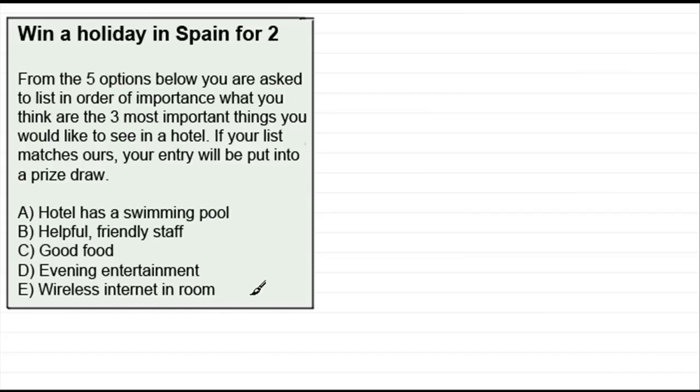And they've got a list of what they think is best, and if you get the right order, your order agrees with theirs, you're going to be put into a prize draw. So how many different ways are there of arranging three different letters from these five?